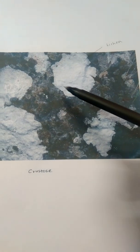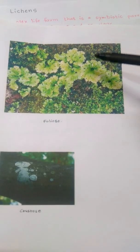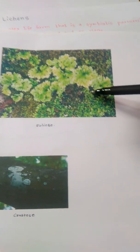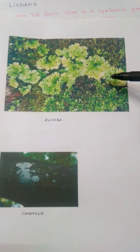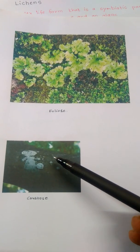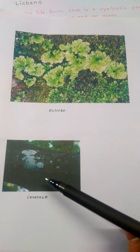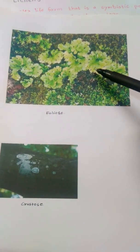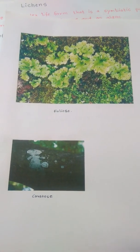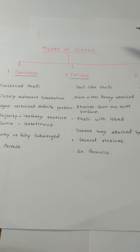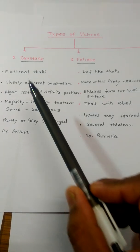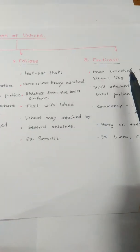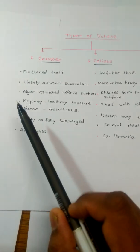Lichens are very flat. The shape and size of Lichens is variable. Some look like a leaf and grow on branches of trees or wood logs. Depending on their structure, Lichens are categorized into three types: Crustose Lichens, Foliose Lichens, and Fruticose Lichens.